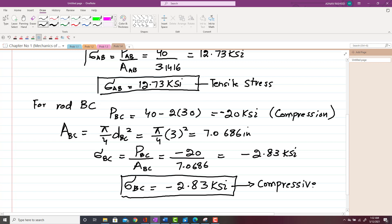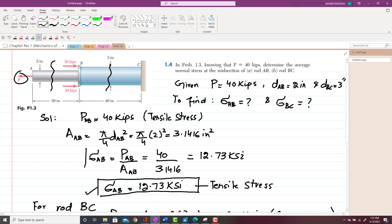So σBC will be equal to -2.83 KSI, means that this rod BC is subject to compressive stress. The negative sign shows that this is a compressive stress. So we have to find out the tensile stress in rod AB and compressive stress in rod BC. So this was our finding, σAB and σBC. So that was all about problem number 1.4. It was an easier one and I hope you have understood this problem. If you have any question, you can ask. Thank you.